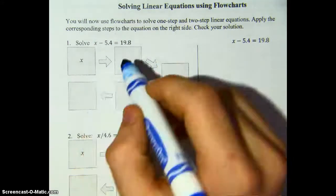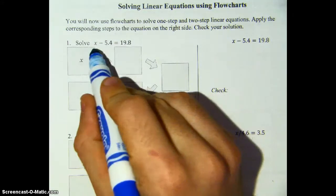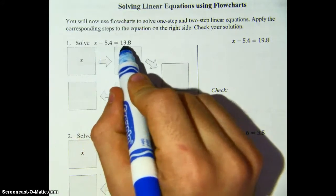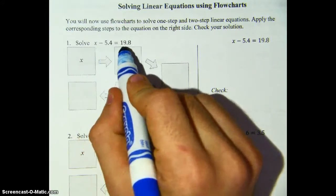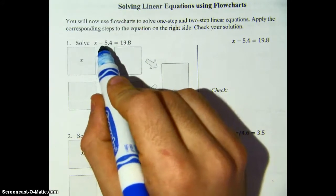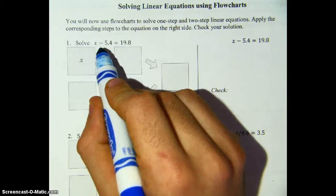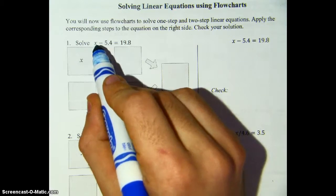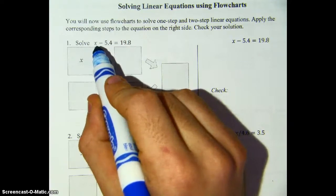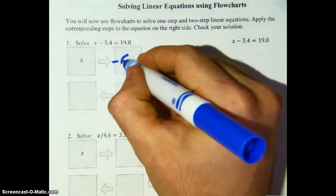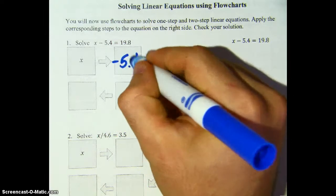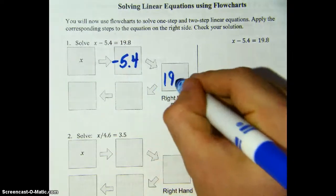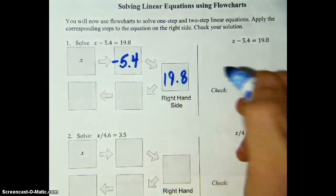Let me show you how that works. So if you've got an equation like this: x minus 5.4 equals 19.8. First think about what is happening to that x — what operation is happening to that x. Well we've got x and we're taking away, we're subtracting 5.4, so we'll write that there. And we should equal 19.8, so we'll write that there.